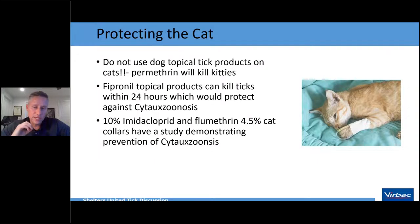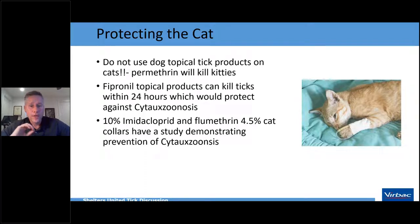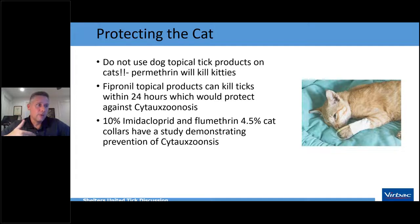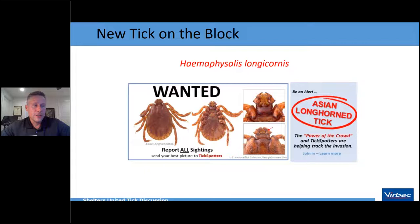When protecting cats, never use dog topical products — permethrin will kill a cat. I have treated many cats whose owners mistakenly applied a dog product, even in smaller doses. For cats, fipronil-based topicals like Effipro Plus do an excellent job killing all four major tick species within 24 hours and would protect against Cytauxzoonosis. There is also a good study on the imidacloprid/flumethrin collar demonstrating prevention of Cytauxzoonosis in cats.